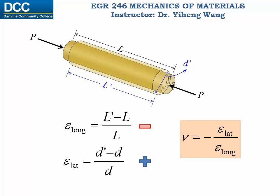Just like density or Young's modulus, the Poisson's ratio is an important property of a material. It is always positive, dimensionless, and is typically between 0 and 0.5.